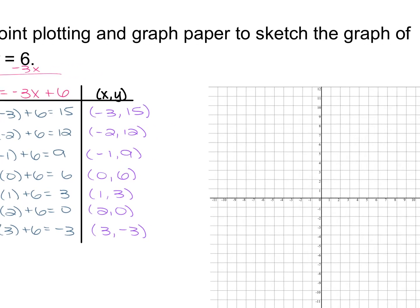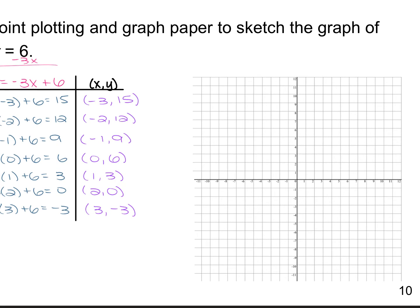Plotting these ordered pairs on the coordinate plane: (-3, 15) doesn't fit on the given plane, but (-2, 12) goes 2 to the left and up 12 from the origin. Then (-1, 9), (0, 6) on the y-axis, (1, 3) going right 1 and up 3, (2, 0) on the x-axis, and (3, -3). These plotted points form a straight line, which means it is a linear function.